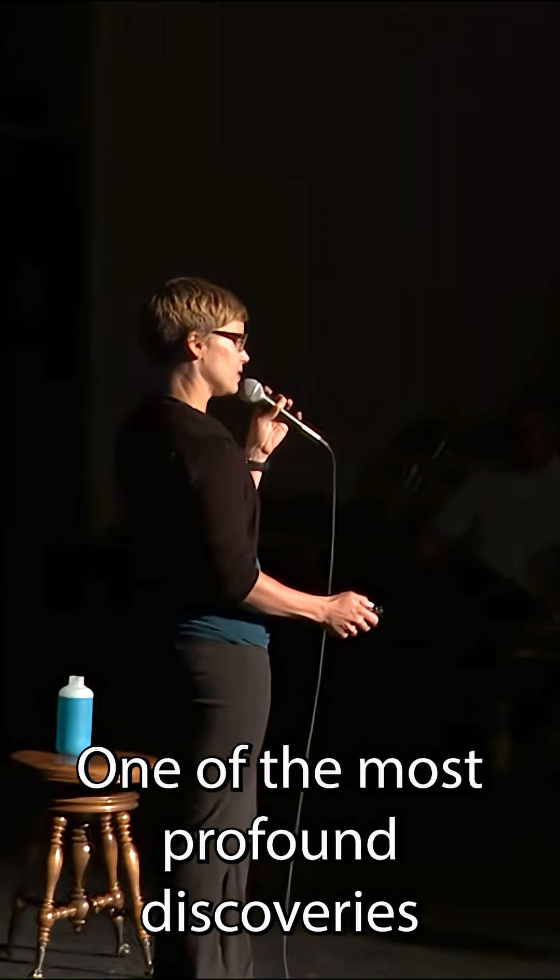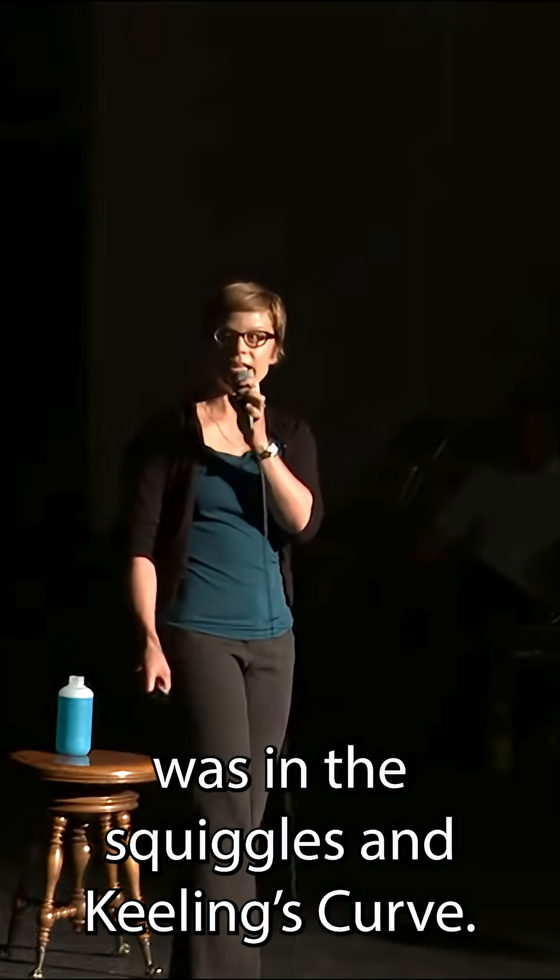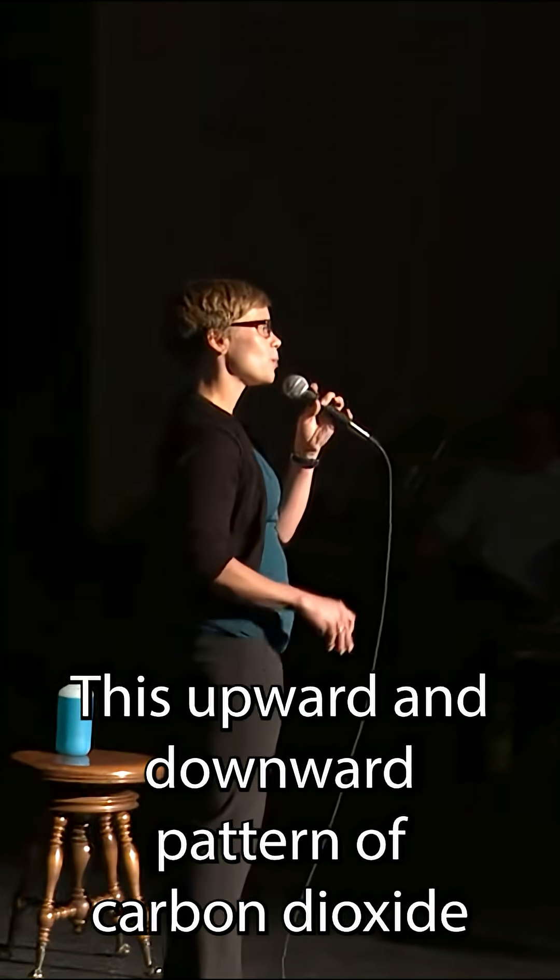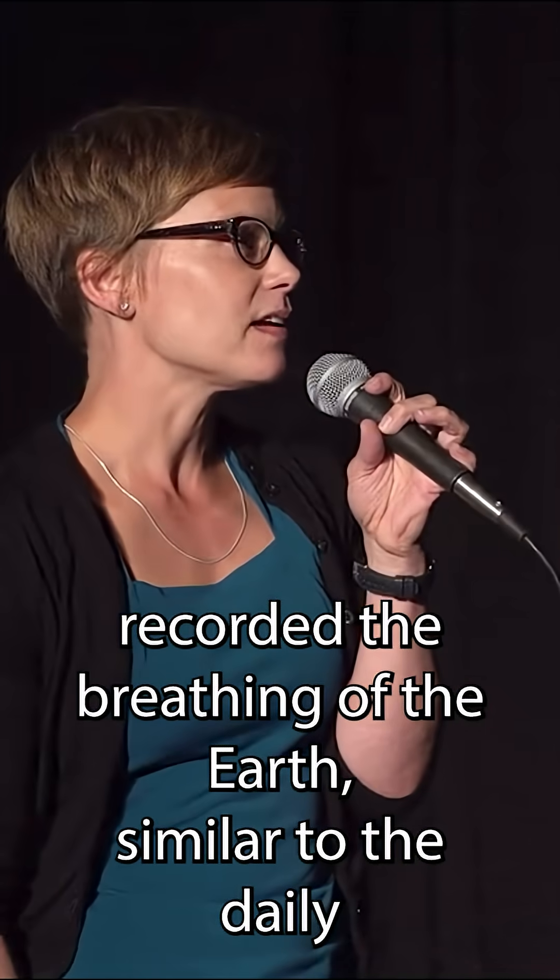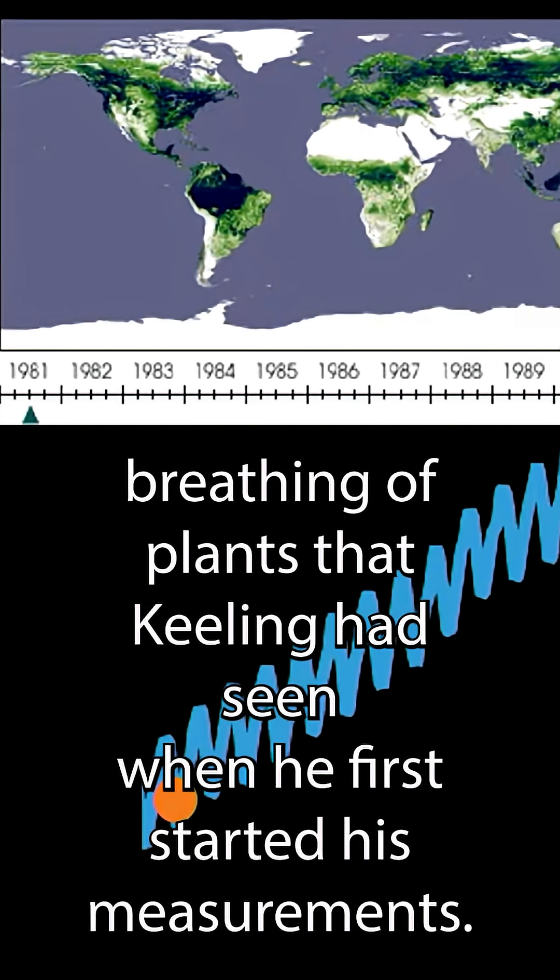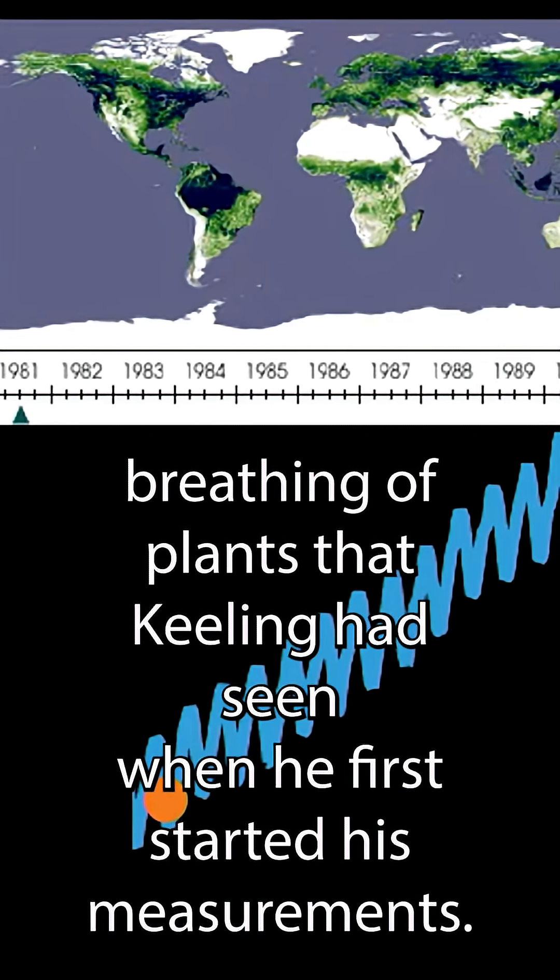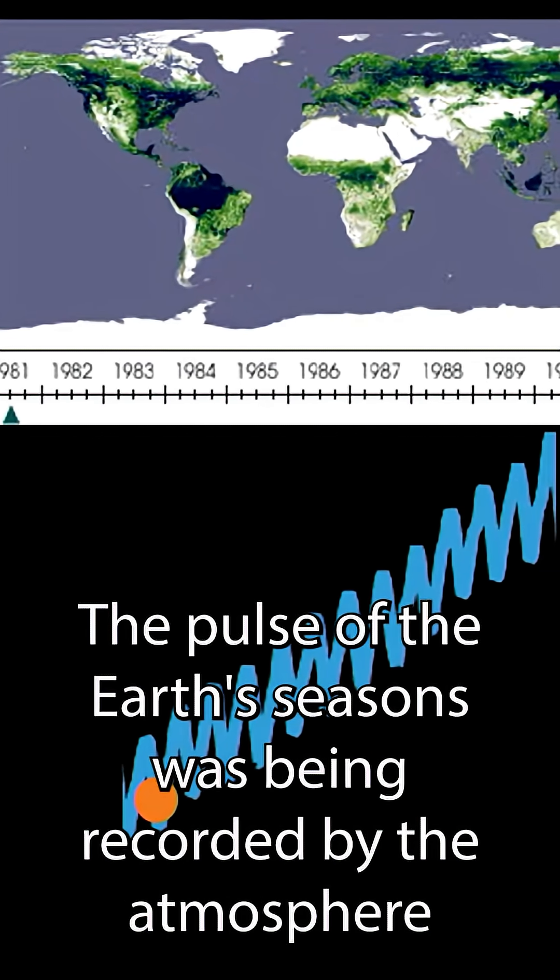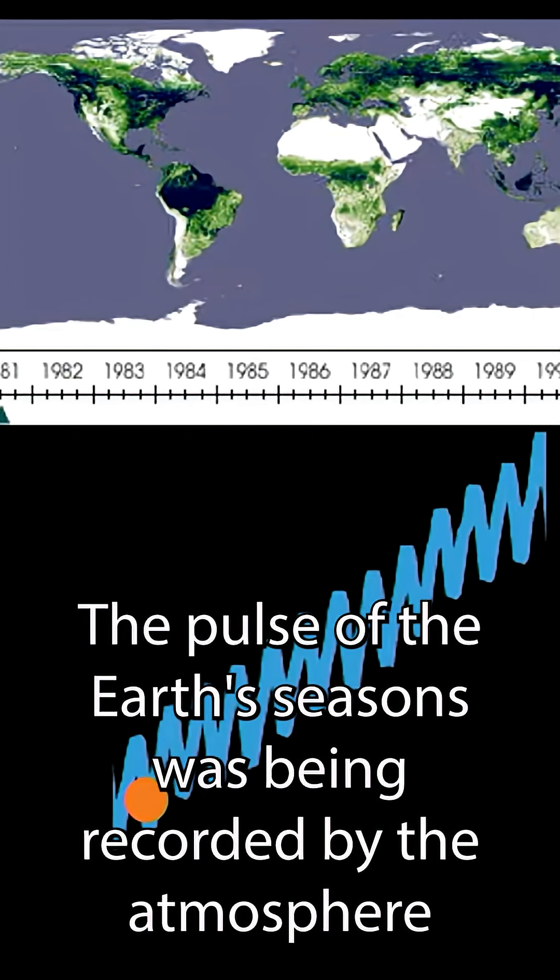One of the most profound discoveries was in the squiggles in Keeling's curve. This upward and downward pattern of carbon dioxide recorded the breathing of the Earth, similar to the daily breathing of plants that Keeling had seen when he first started his measurements. The pulse of the Earth's seasons was being recorded by the atmosphere.